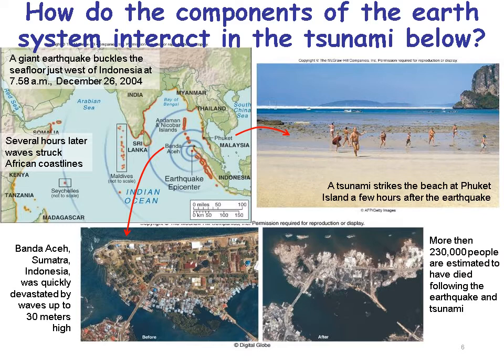How do the components of the Earth System interact in a tsunami? In Indonesia, on December 26, 2004, a giant earthquake buckled the sea floor just west of the country, and several hours later waves struck the African and Indian coastlines and devastated coastlines all along Thailand, Malaysia, and Indonesia. One village called Banda Aceh in Sumatra was devastated by waves up to 30 meters high — higher than the trees you'd find in your backyard.